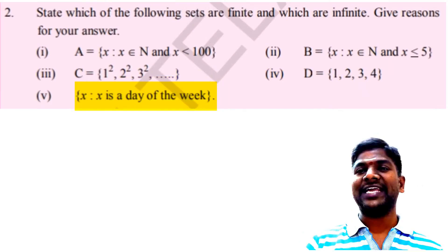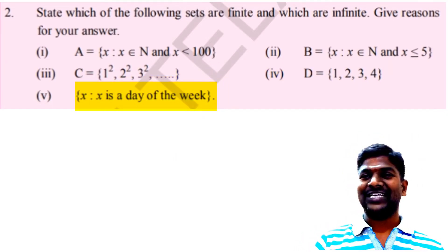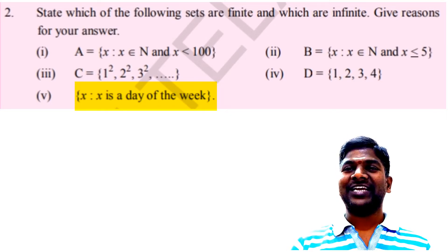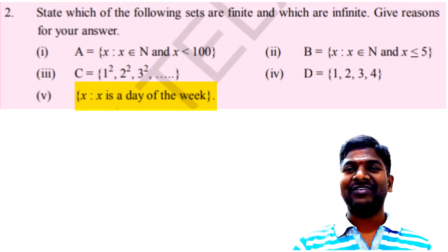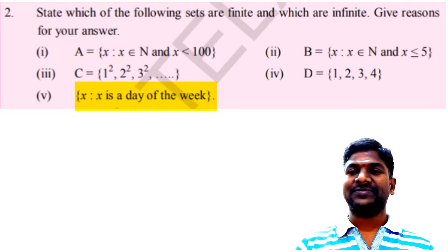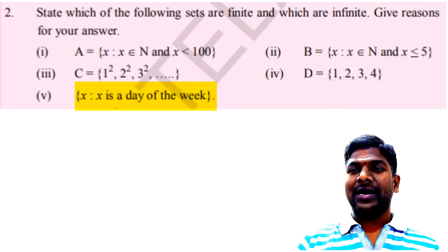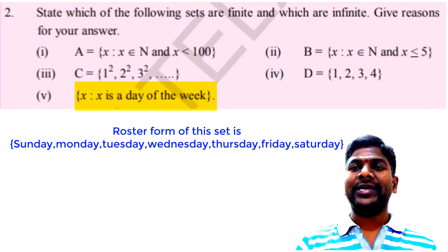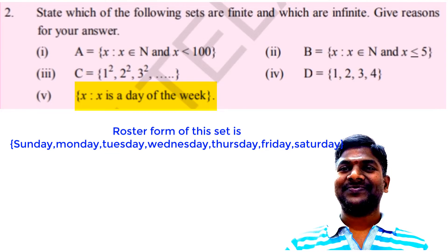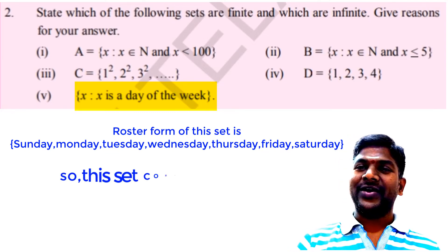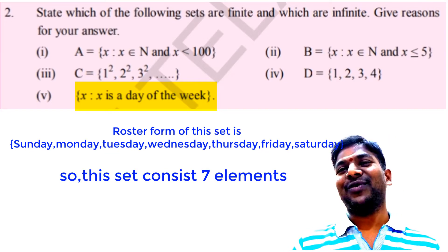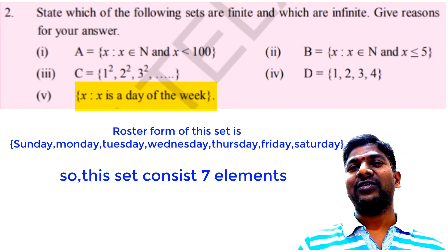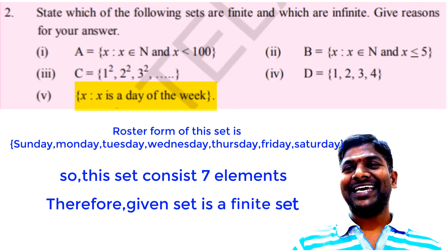Another example: X such that X is a day of the week. Let us write the days of the week to form the set: Sunday, Monday, Tuesday, Wednesday, Thursday, Friday, Saturday. There are 7 elements. It is possible to count the number of elements in the given set. Therefore, the given set is a finite set.